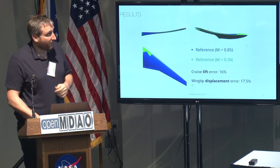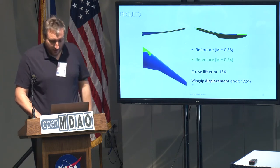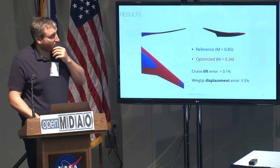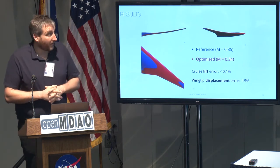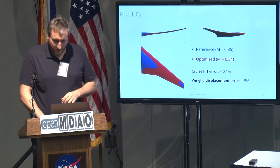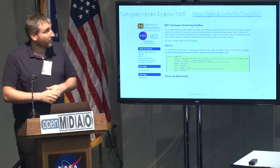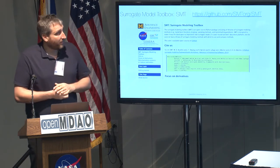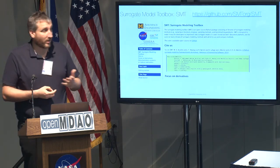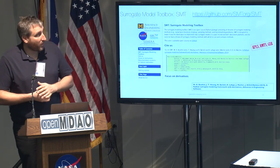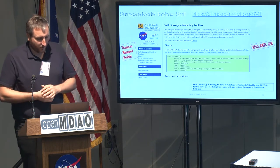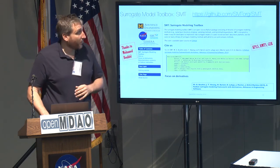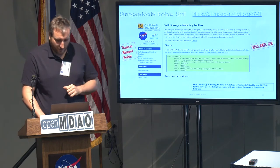Starting from an initial difference in cruise wing displacement, we updated the aeroelastic similarity between the reference aircraft and the flying demonstrator. If you want to use it, the code is available along with a paper explaining it. There are several options for surrogate modeling including gradient-enhanced kriging, and I'd like to thank Mohamed Bouhlel for this work.